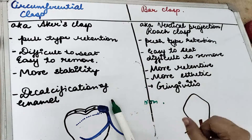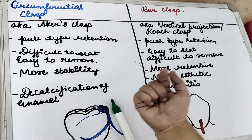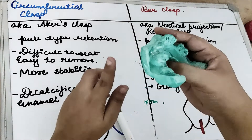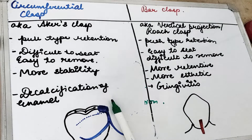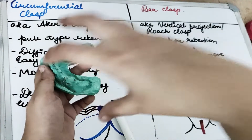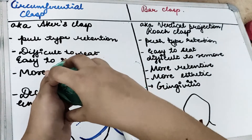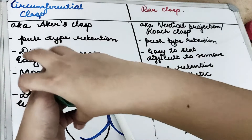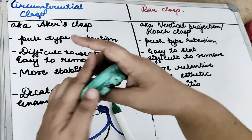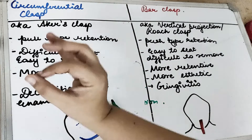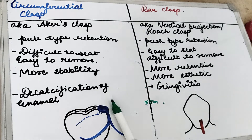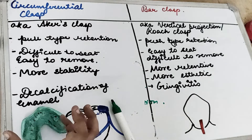A bar clasp is also known as the vertical projection clasp because there is a vertical projection coming from the gingiva, or the roach clasp. This is a push type of retention. When we are trying to seat the RPD, it is easy to seat with the bar clasp. But when we are trying to remove the RPD, because it is engaging from the gingival part, it is very difficult to remove — and when something is difficult to remove, it is more retentive. So a bar clasp is more retentive.